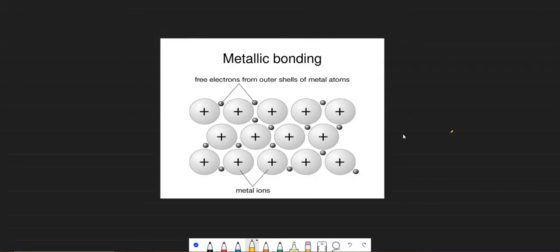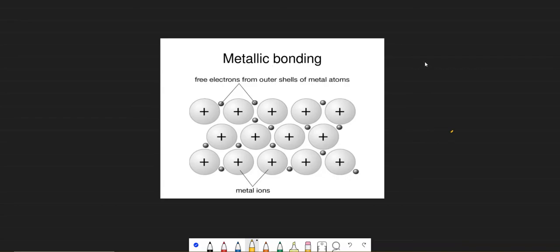The topic we are starting today is called metallic bonding. We have already discussed ionic bonding and covalent bonding. Metallic bonding is different from both because the bonds we have discussed so far always needed two atoms to transfer or share electrons — two atoms from different elements. But metallic bonding does not require atoms of different elements. For example, a chunk of pure sodium will have metallic bonding.